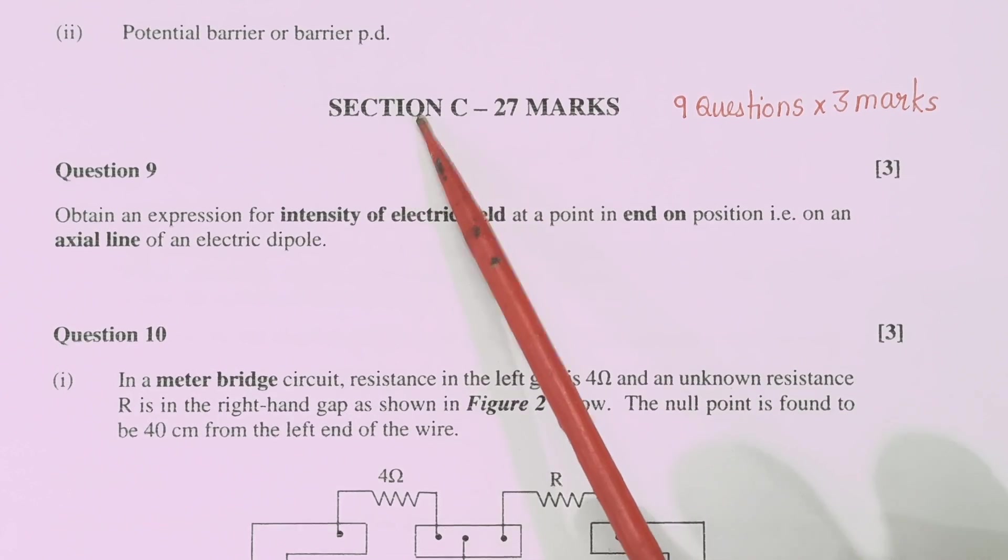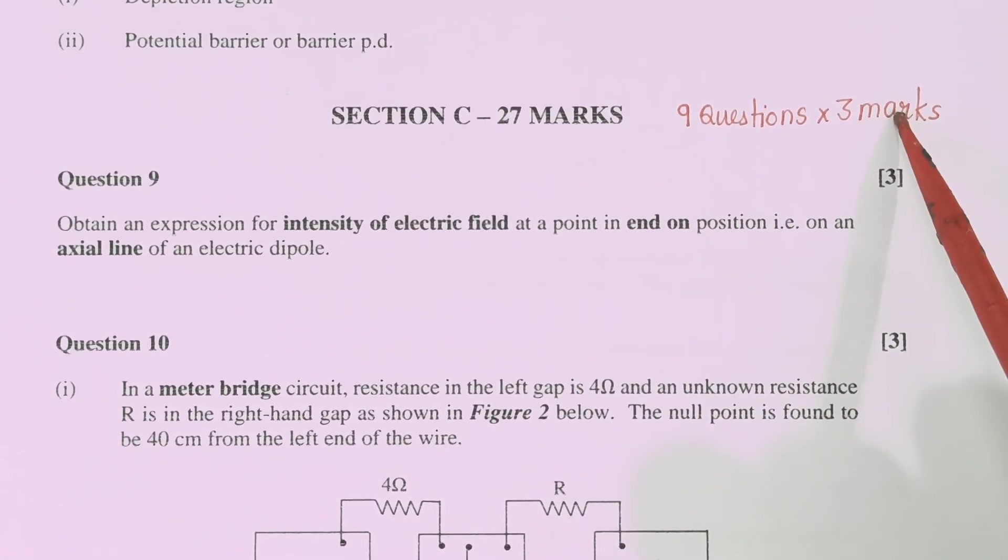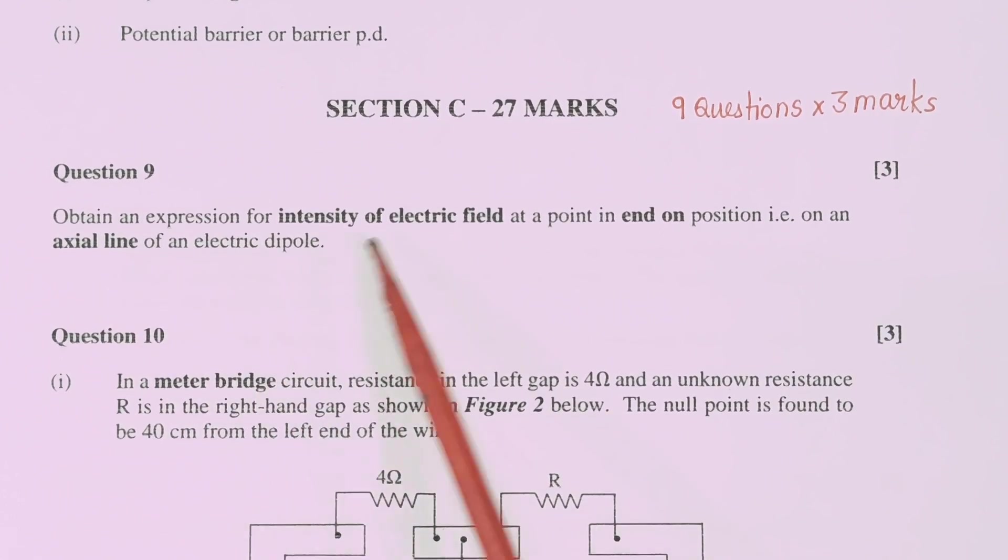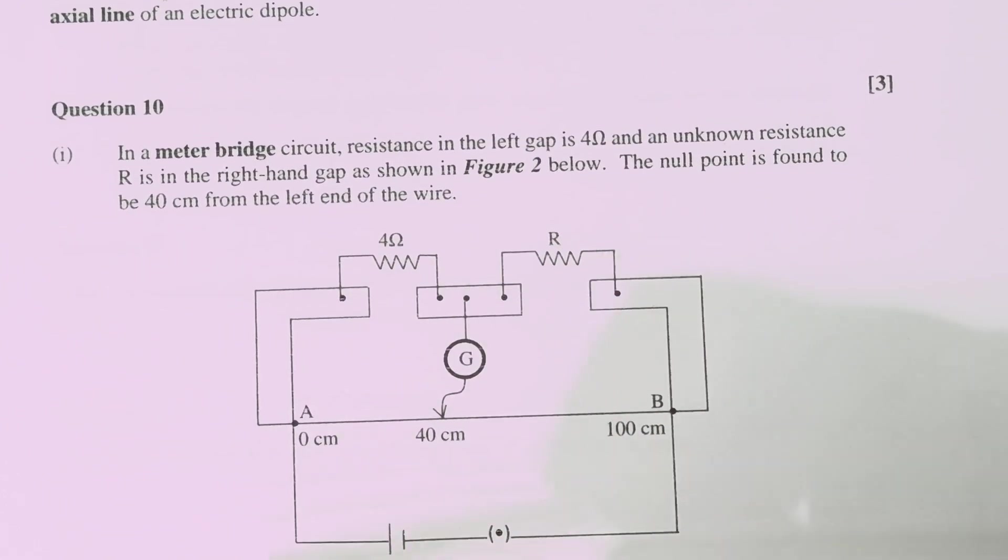Now come to section C, it carries 27 marks, 9 questions and each question carries 3 marks. Obtain expression of electric field. So it is a derivation right. This is a numerical.